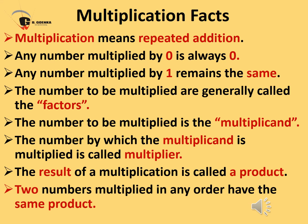The numbers to be multiplied are generally called the factors, and the number to be multiplied is called the multiplicand. The number by which the multiplicand is multiplied is called the multiplier, and the result of the multiplication is called the product — which means the answer of multiplication is called a product.